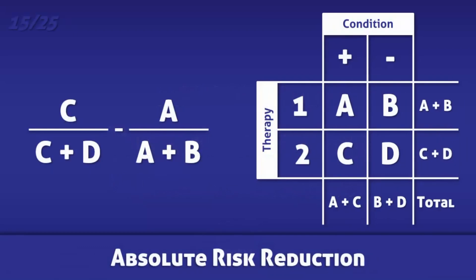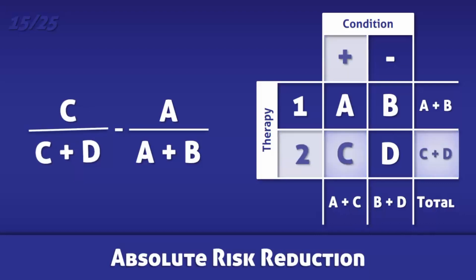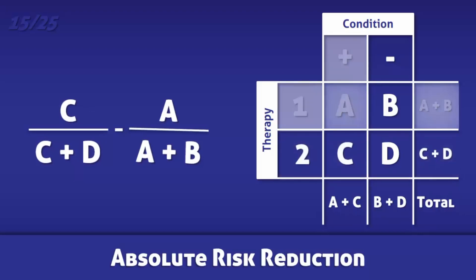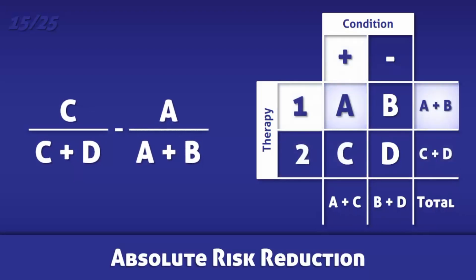Absolute risk reduction is the decrease in incidence of a condition or illness due to an activity, lifestyle modification, or therapy. It is calculated by subtracting the incidence of the condition in individuals in one treatment group, for example people who receive therapy 2, by the incidence of the condition in individuals in another group, in this case those who receive therapy 1.